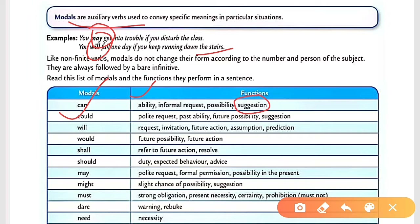'Could' is the past tense of 'can'. It is used for polite requests (e.g., 'Could you please pass the salt?'), past abilities (e.g., 'He was the winner of the cricket match so he could...'), future possibility (e.g., 'It could happen'), and suggestions (e.g., 'You could give your pen to me' or 'You could do this work').